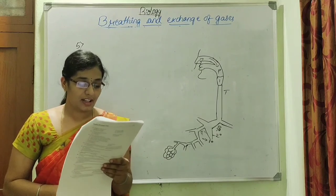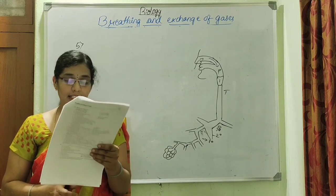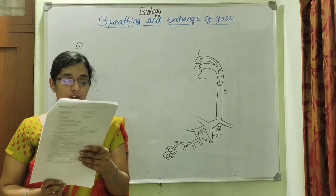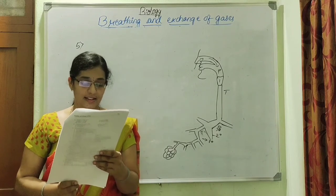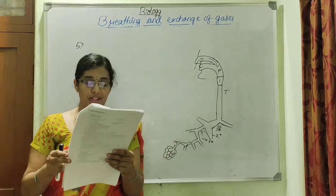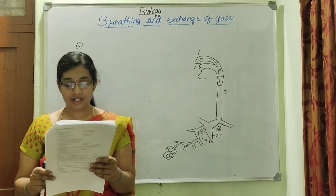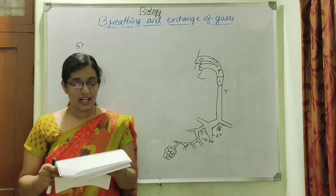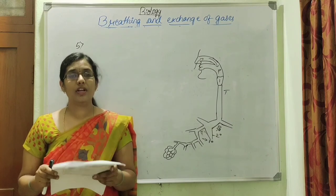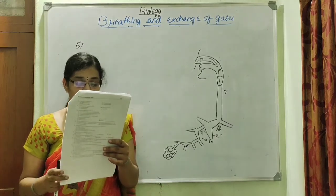Next questions and answers: In mammals, voice is produced by the larynx (sound box) — Option C. Vocal cords occur in the larynx — Option B. The trachea divides into right and left primary bronchi at the 5th thoracic vertebra — Option B.